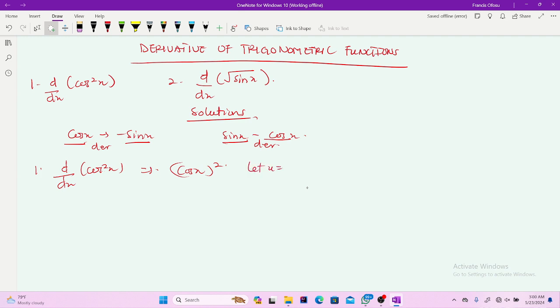At this point, let u be equal to the inner function, cos x. So our du/dx, our u prime, will be equal to negative sin x. Then our function...